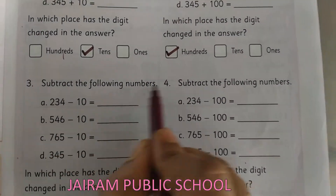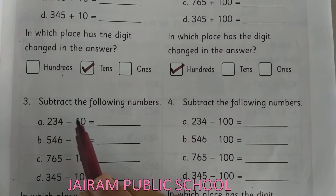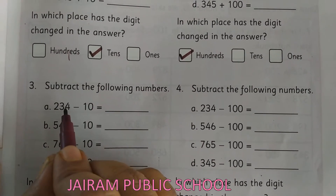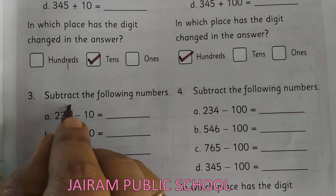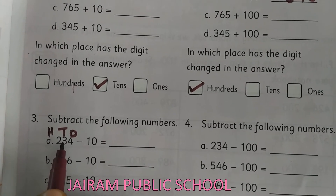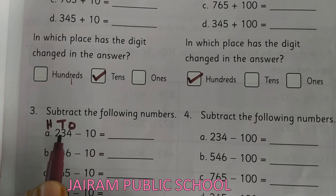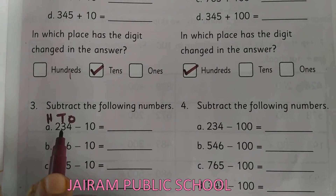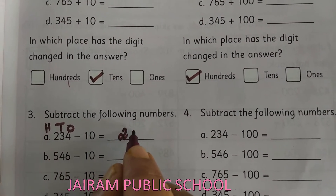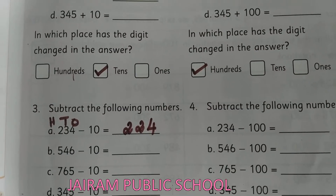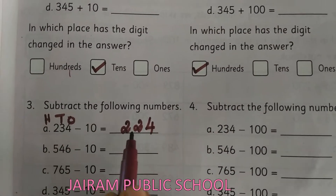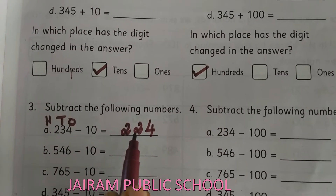Next, we are going to see subtract the following numbers. Now we are going to do the subtraction. 234 minus 10 means you are going to subtract 1 from the 10s place. So you write 1 stands for 100, Kanna. Then subtract 1 from the 10s place. Here we are having 3 tens. If you subtract 1, we will be having 2 tens. Very good! So what will be the answer? 224.